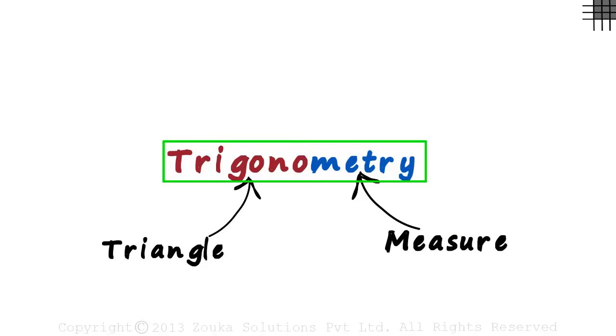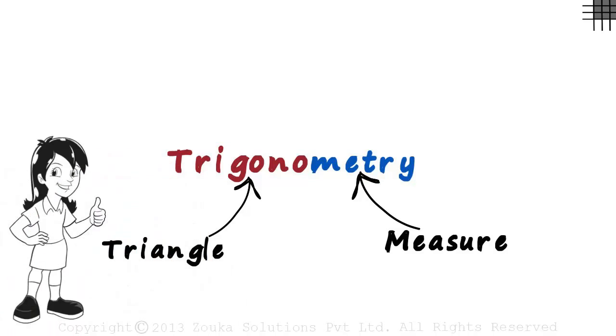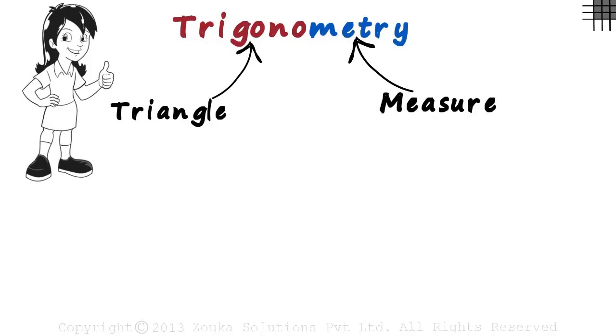Trigonometry is one of the most feared topics in mathematics. But in reality, it is extremely simple. The meaning itself is so simple. It's just the measure of all the things possible in a triangle.